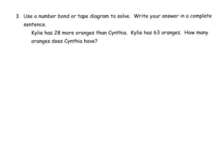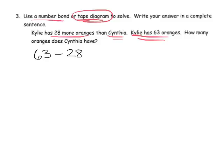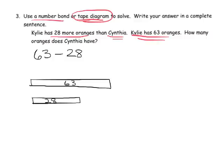All right, for our final problem, we are being told to use a number bond or a tape diagram to solve this question. And it says Kylie has 28 more oranges than Cynthia. Kylie has 63 oranges. We're going to use the, let's use a tape diagram on this problem because we know that we're going to do 63 minus 28 in order to figure out how many oranges Cynthia has. And so the idea would be, let's model this. So we're going to look at 63 right here. There's our 63. And we need to subtract 28. So I'm just going to represent 28 with this right here. And the gap between these two, there's our answer right there.